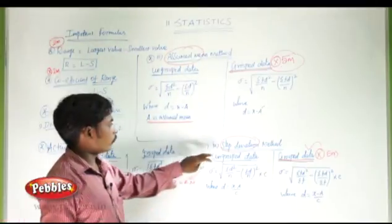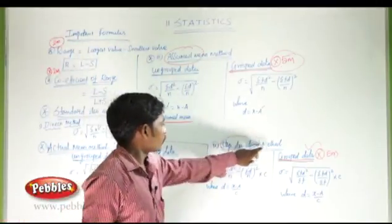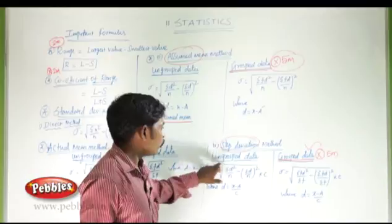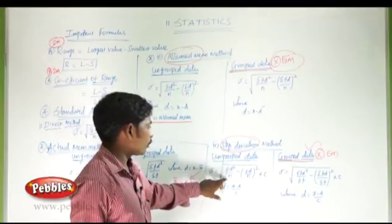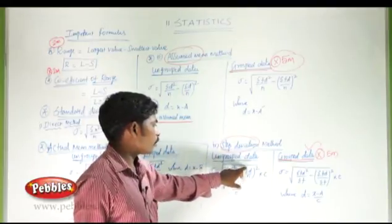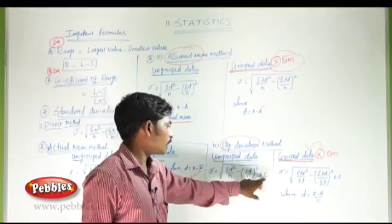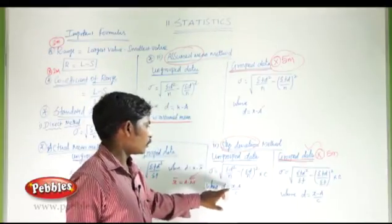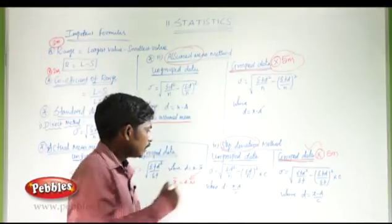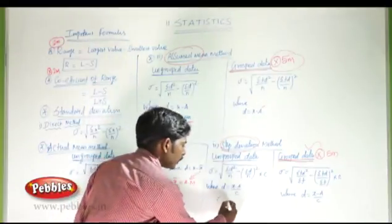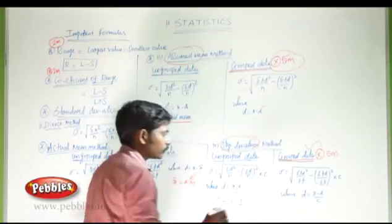The fourth and last formula is the step deviation method for ungrouped data: standard deviation = √(σd² / n − (σd / n)²) × c, where d = (x − a) / c, and c is the class interval. Thank you.